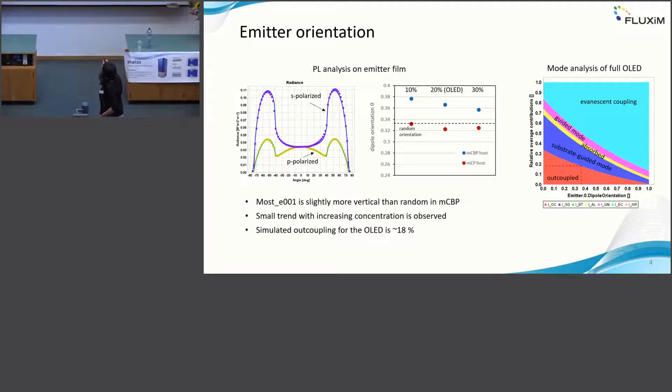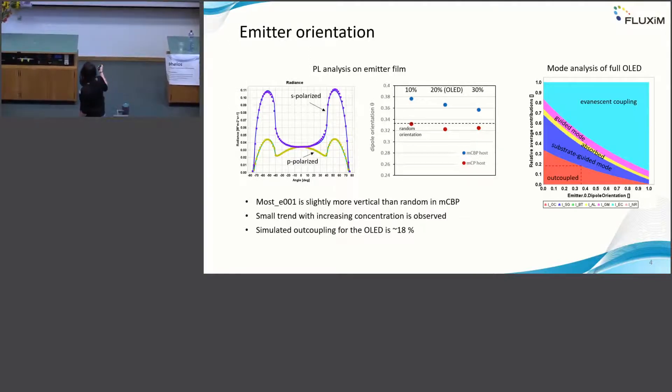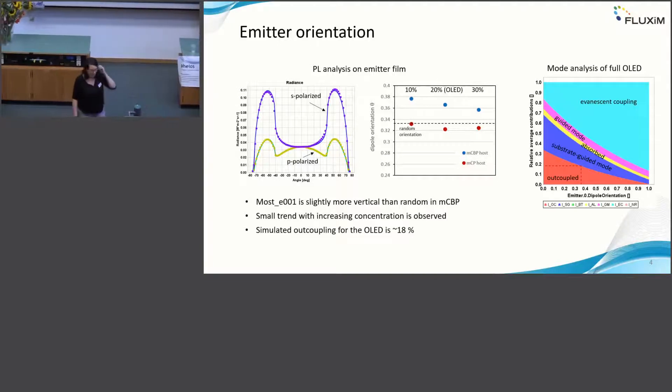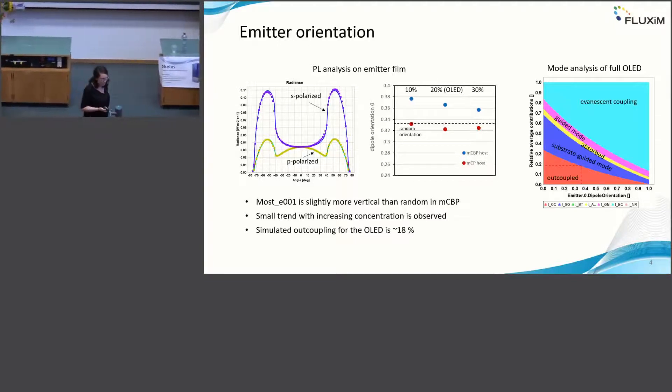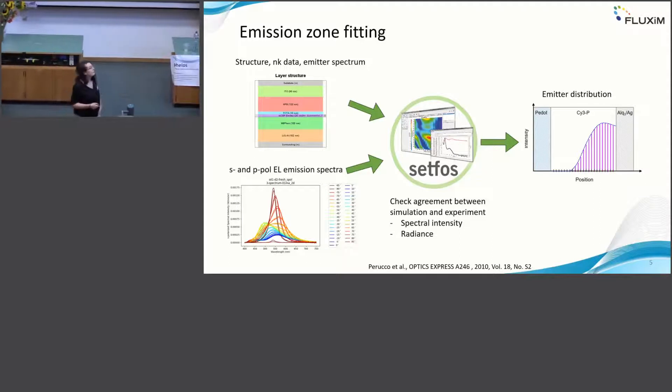If you look at this 0.37 orientation and vary this parameter and do some mode analysis, you can actually get the fraction of outcoupled light. You see that for this device, you get approximately 18%. So there is some room for improvement already if you could tune this emitter orientation a bit more. But this was just a very simple study in the first place.